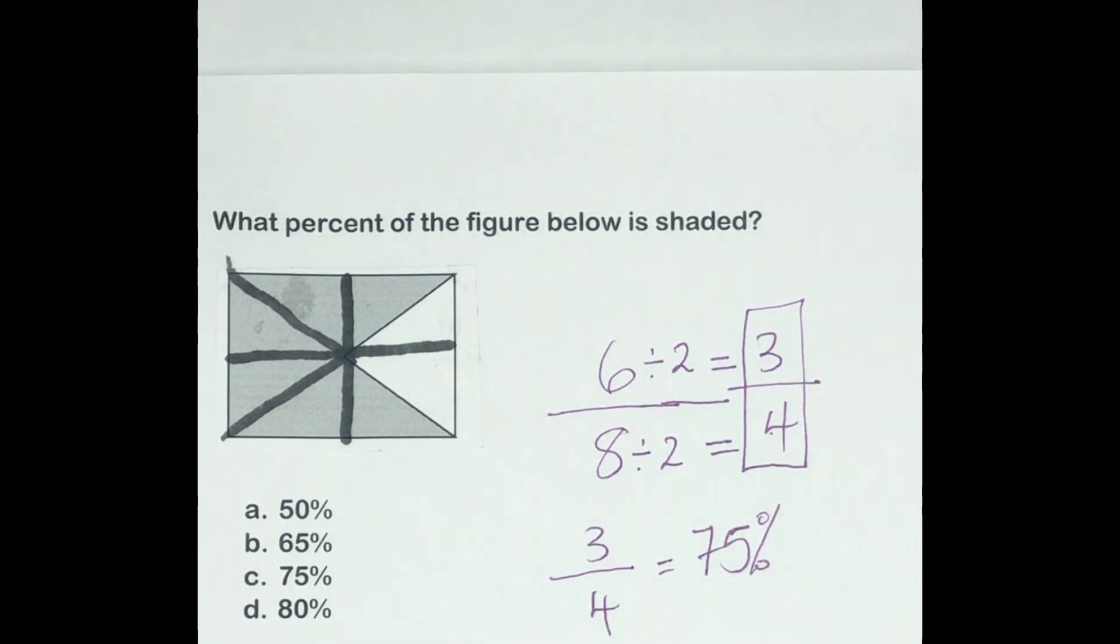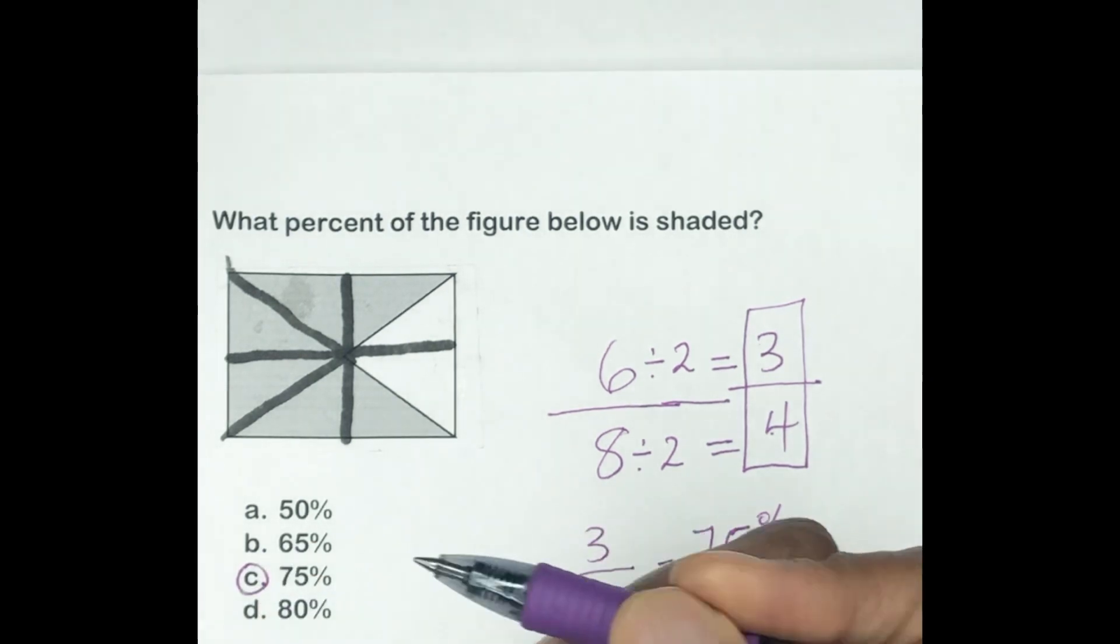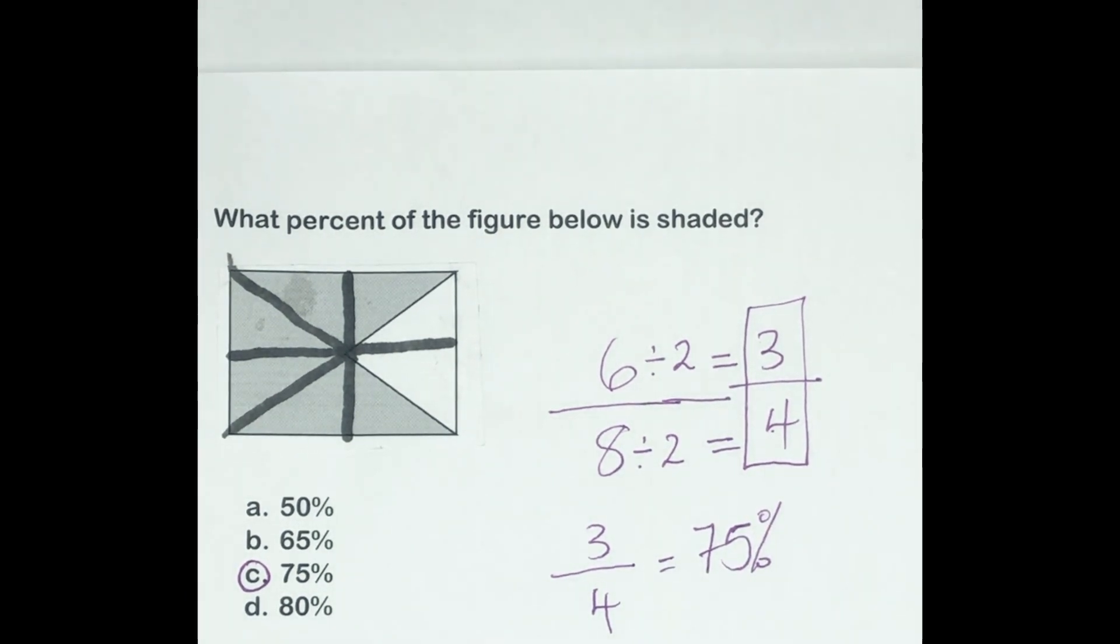So the answer is C. Did you all get that with me? Okay, now let me see, let me prove to you then, because suppose I didn't give you that example and say that 3/4 is 75 percent. You could also divide the denominator into the numerator to get the answer as well.